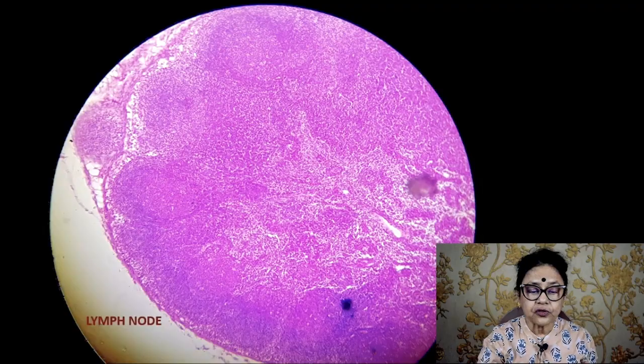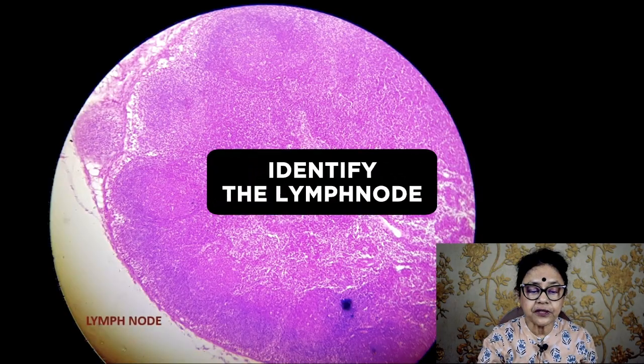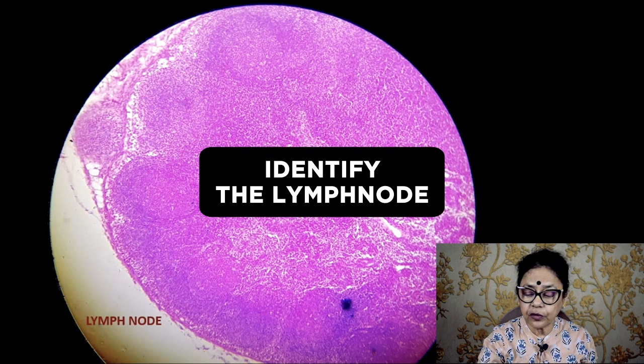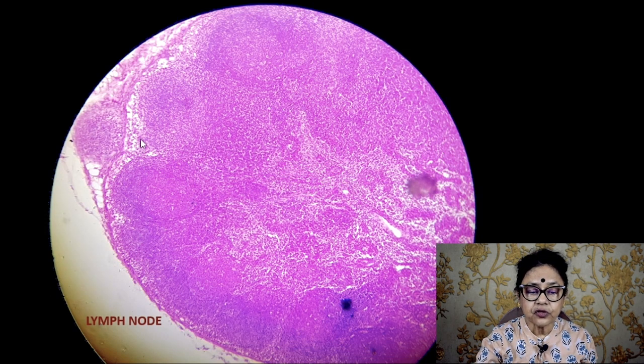Now, how will you identify the slide of the lymph node? The lymph node is a small bean-shaped structure, and it is when it is visible that it is in a disease state. So how will you identify the lymph node?